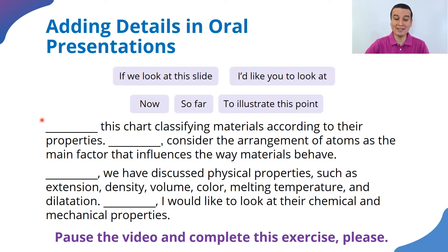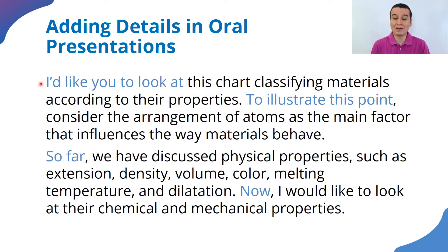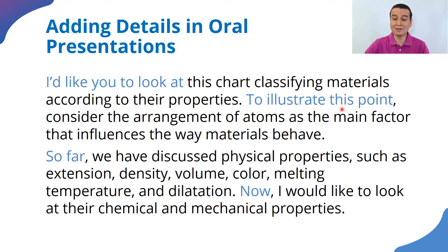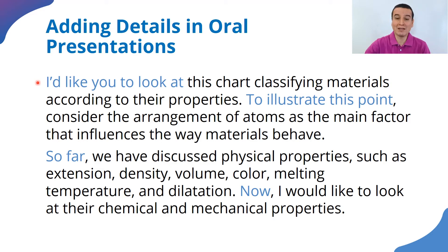Here is the sample answer. She says: 'I'd like you to look at this chart classifying materials according to their properties' — pointing at a visual aid. 'To illustrate this point, consider the arrangement of atoms as the main factor that influences the way materials behave. So far we have discussed physical properties such as extension, density, volume, color, melting temperature, and dilatation. Now I would like to look at their chemical and mechanical properties.'